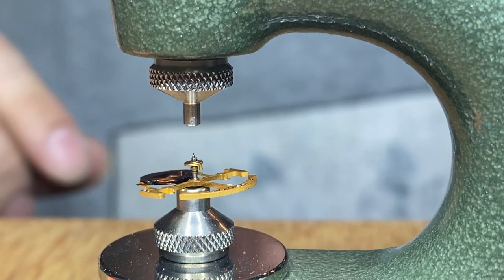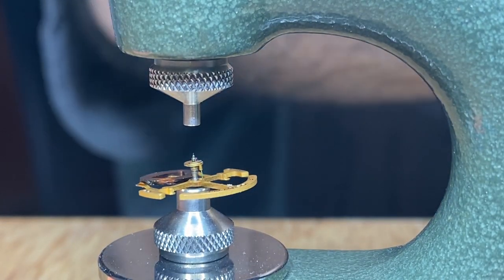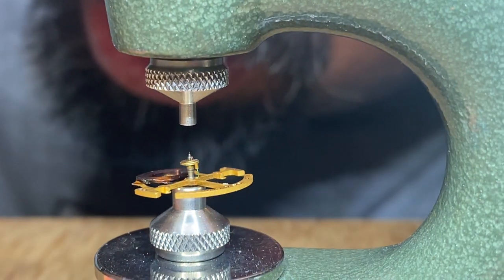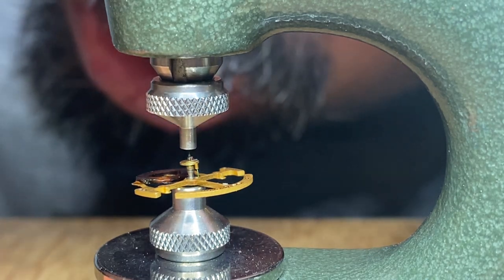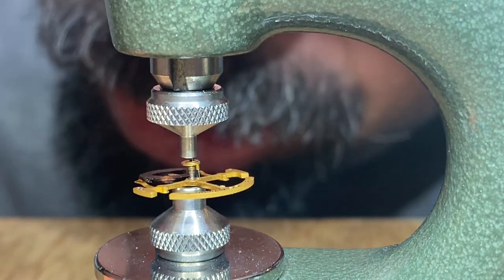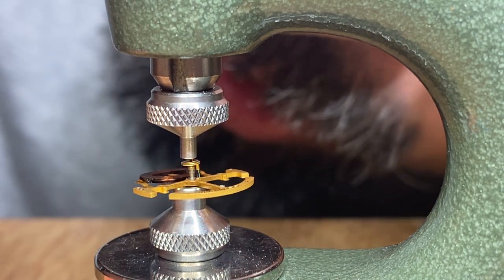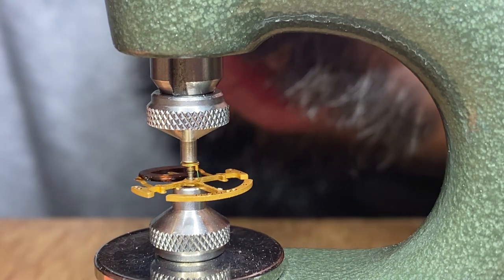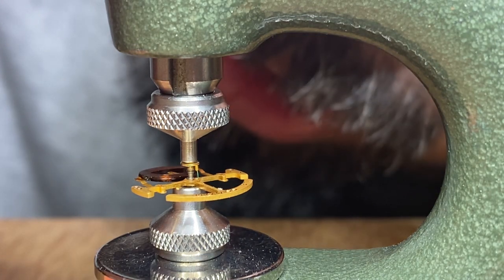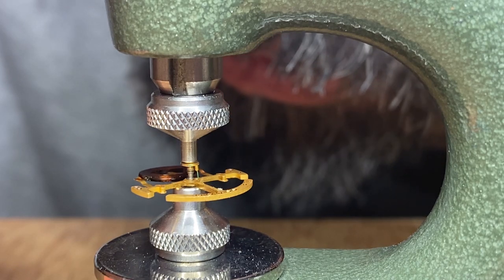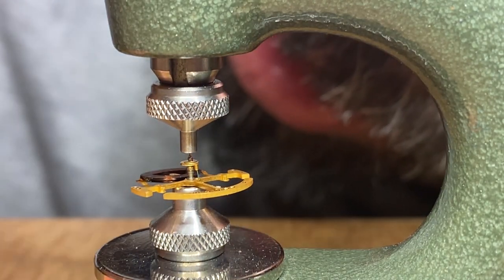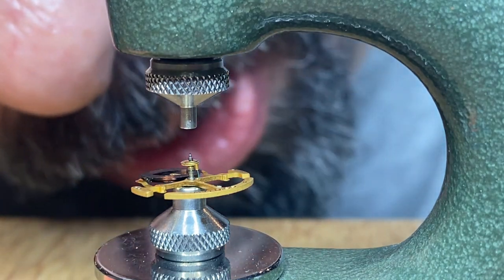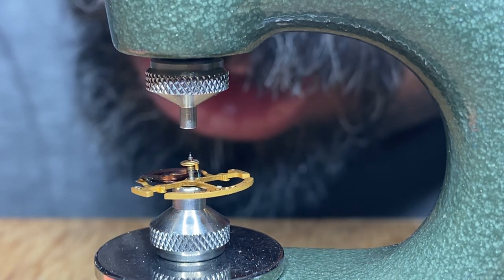I actually, full disclosure, I already just did this without the camera running. But to repeat what I did, I used my press and used a collar that was wide enough to go around both the pivot and the impulse jewel, the roller jewel there, like so, and then carefully pressed. Now, one thing I noticed was that it didn't press exactly parallel, but I was able to fix that with the tweezers. So hopefully that works. So that is how I re-pressed the pivot back onto the balance.